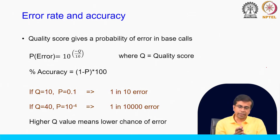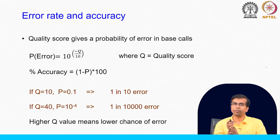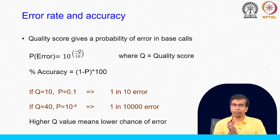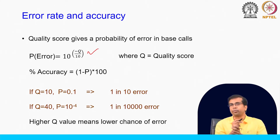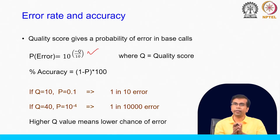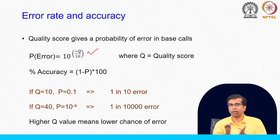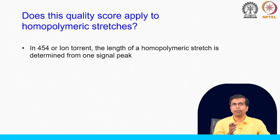To illustrate: if Q equals 10, probability of error is 0.1, meaning 1 in 10 error — a high error rate giving 90 percent accuracy. If Q equals 40, probability of error is 10 to the power of minus 4, meaning 1 in 10,000 error — very low chance of an erroneous base call. Higher Q value means lower chance of error.